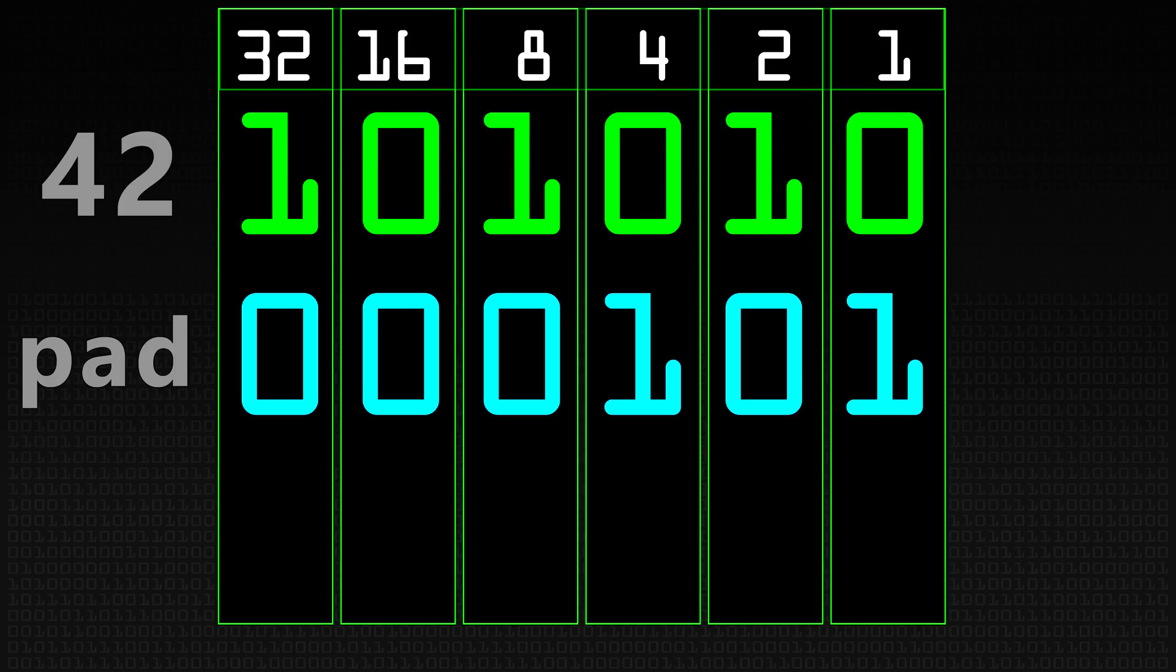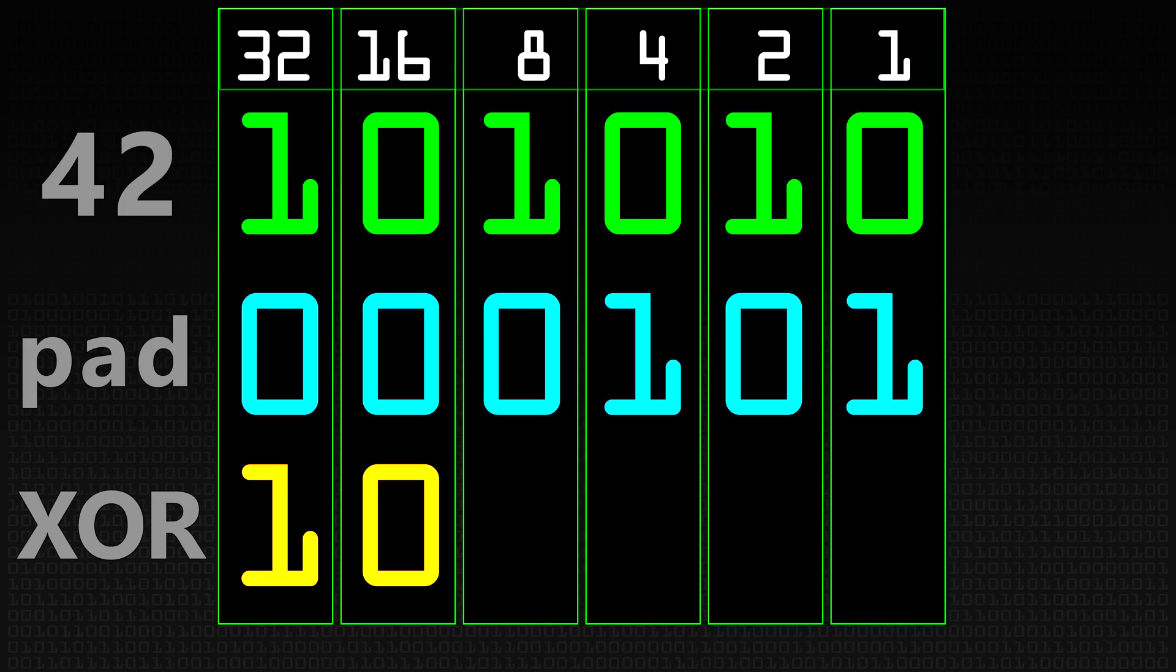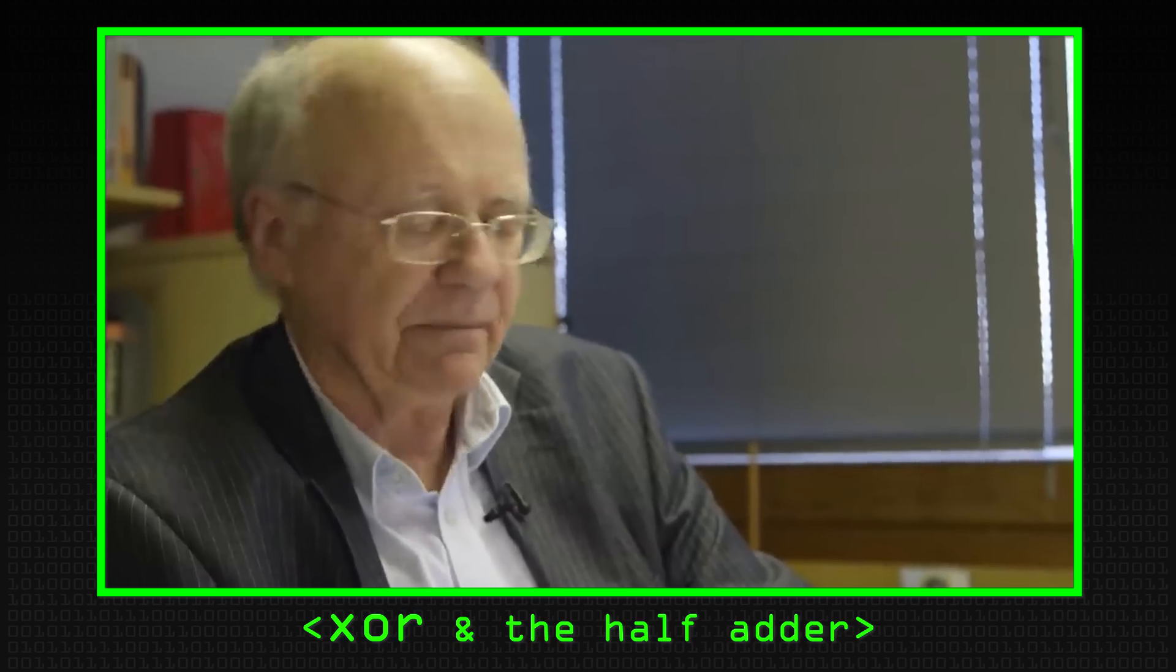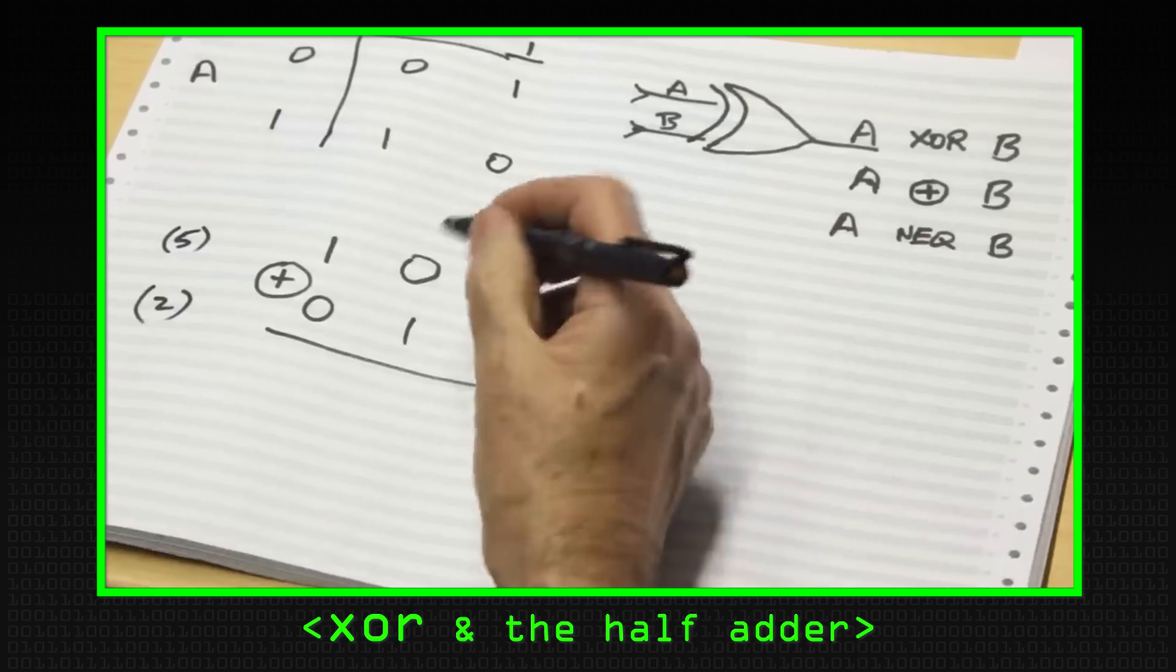And we XOR these values, meaning if we have a 1 and a 0, we get a 1. If we get a 0 and a 0, we get a 0, 1, 1, 1, 1, 1. If the values are the same, you get a 0, if the values are different, you get a 1, that's an XOR.